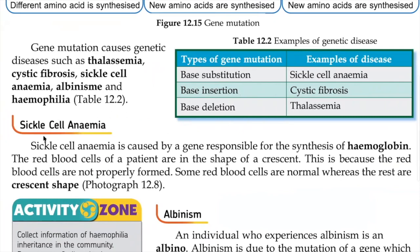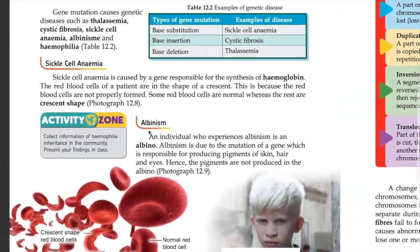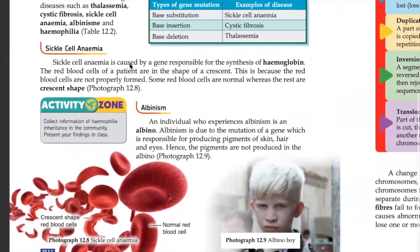Sickle cell anemia is caused by a mutation in the gene responsible for synthesizing hemoglobin. When base substitution occurs, it changes the amino acid. When the amino acid has a problem, the protein has a problem. So when protein has a problem, we cannot have good quality hemoglobin — and this causes someone to suffer from sickle cell anemia.